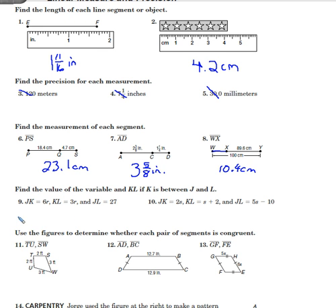A little bit of work to do on 9 and 10. Find the value of each variable and also find KL if K is between J and L. I'm going to draw a little segment of this situation here. K is between J and L. Here's J, here's L. They say JK is 6R, so I'm going to label that. KL is 3R. And then they say that the whole thing, JL is 27. From edge to edge, JL is 27. We have to add together in order to solve for R. The 6R plus the 3R will add up to 27.